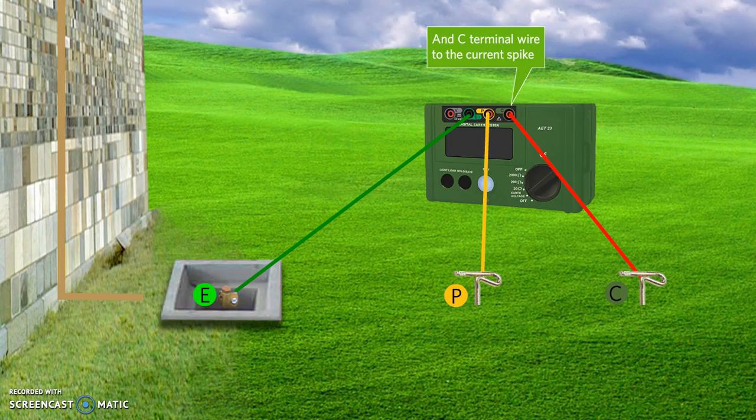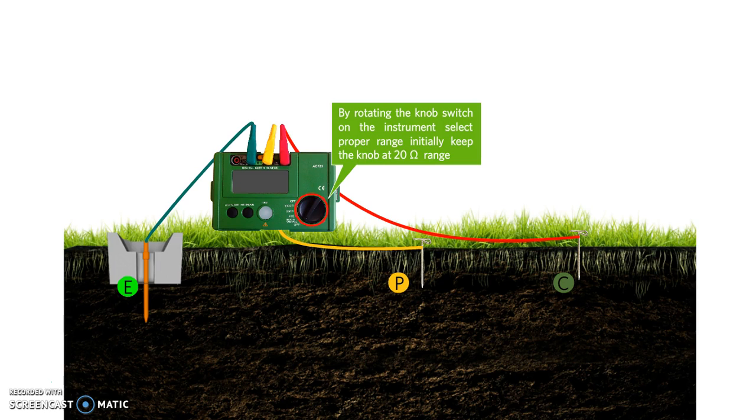Once we are done with the connections, now with the help of the selector switch select a proper range of resistance. Initially keep it to 20 ohms and then press the test button.